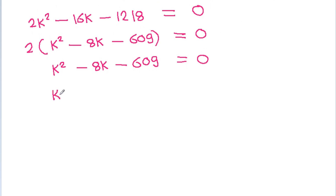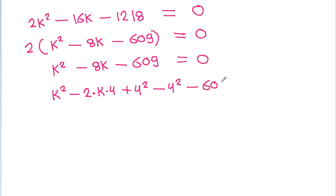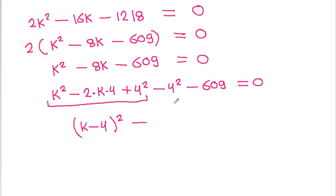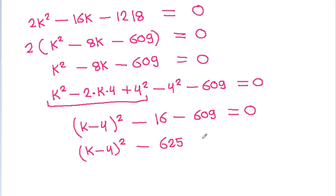We have k squared minus 8k, which is minus 2 times k times 4. Adding and subtracting 16, we complete the square: (k minus 4) squared minus 16 minus 609 equals 0. So (k minus 4) squared minus 625 equals 0.